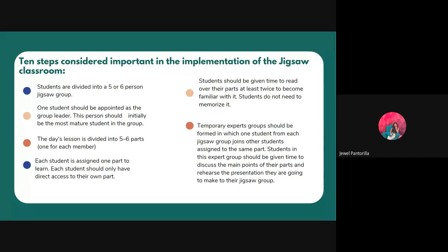Temporary expert groups should be formed in which one student from each Jigsaw group joins other students assigned the same part. Students in this expert group should be given time to discuss the main points of their parts and rehearse the presentation they are going to make to their Jigsaw group. They will gather with all other students assigned to the same parts — this is called the expert group — and compare their ideas and work together.